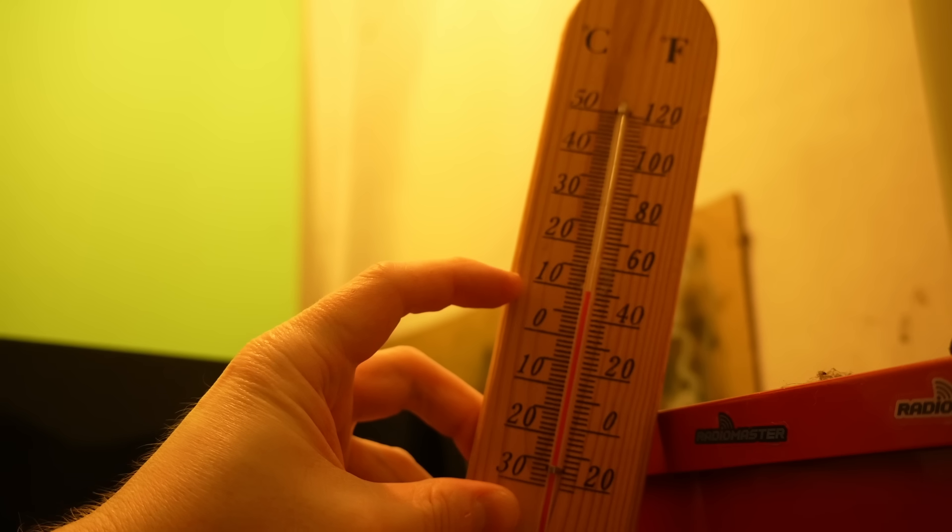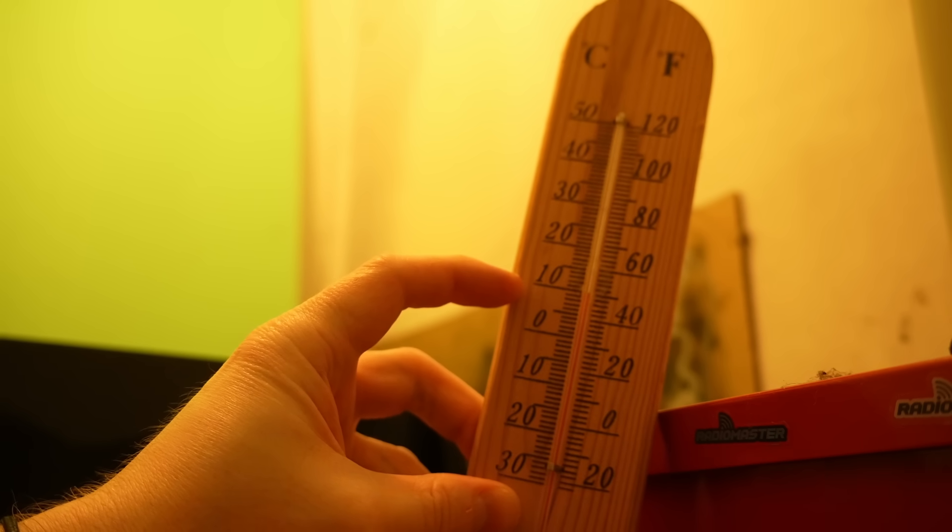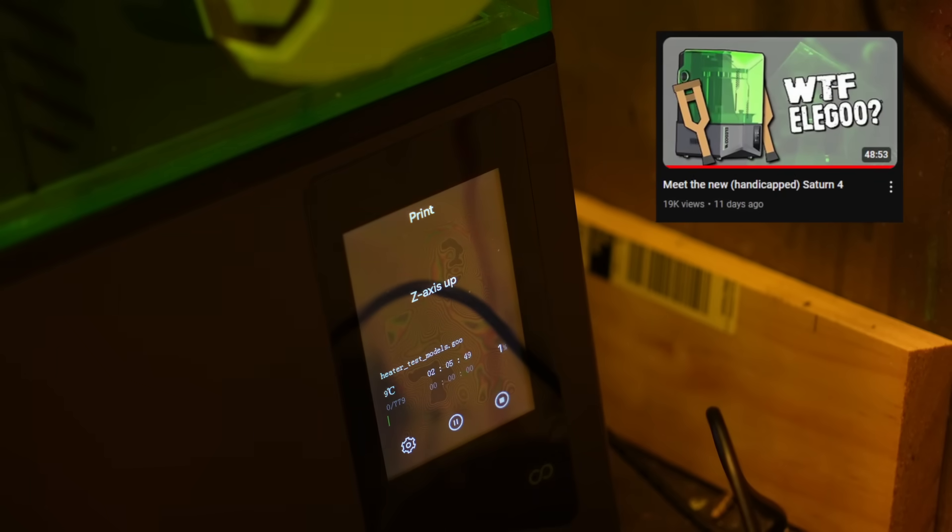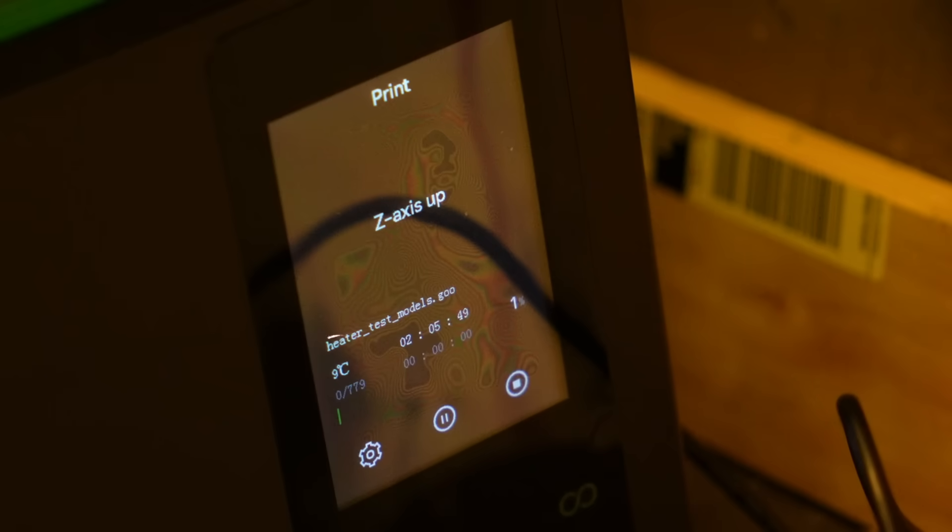All these prints for these tests were run late at night or early in the morning when the temperature was at its coldest and you can see here as we begin our first test print with no heating that we're sitting at a nice and nippy 10 degrees C and what's cool about this Saturn 4 which I didn't notice earlier when I did my first impressions video is that it actually has an onboard temperature so we can see it's 10 degrees C inside the printer as well.